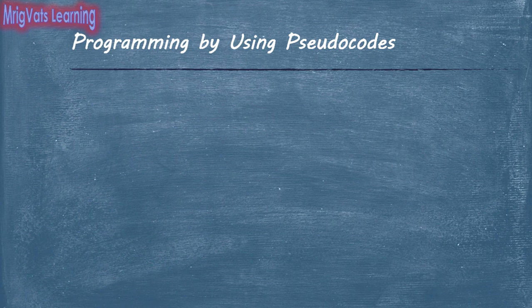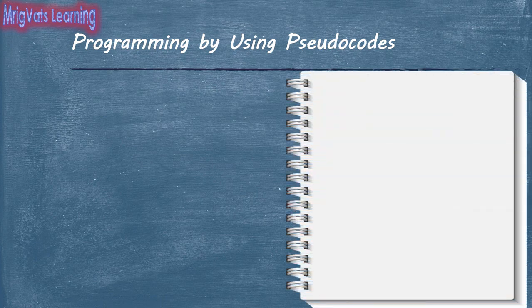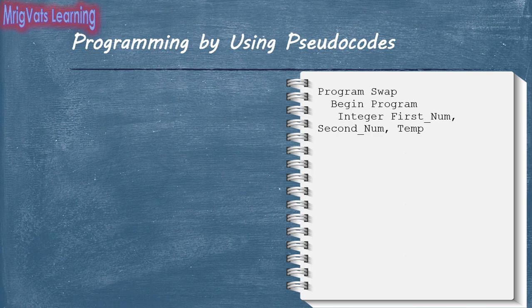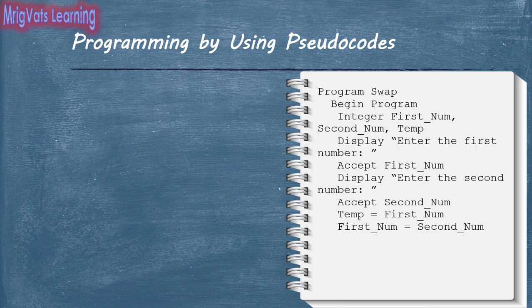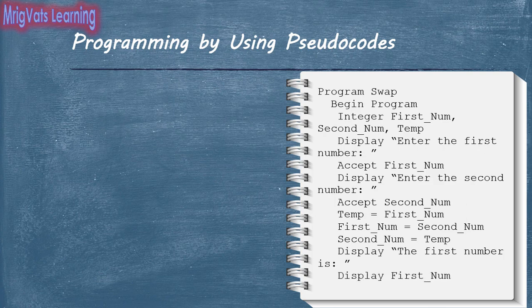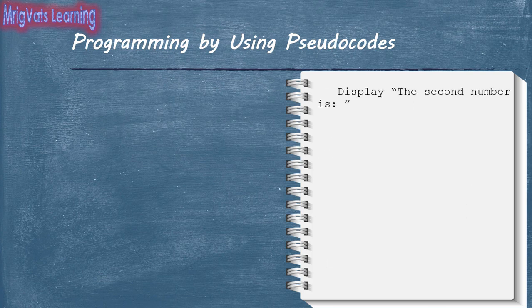Let us now create a program that accepts two numbers, swaps the values of the two, and then displays the result. Write the program as shown in the scripting area. Program: Swap. Begin Program: integer firstnum, secondnum, temp. Display 'Enter the first number.' Accept firstnum. Display 'Enter the second number.' Accept secondnum. temp = firstnum. firstnum = secondnum. secondnum = temp. Display 'The first number is.' Display firstnum. Display 'The second number is.' Display secondnum. End Program.